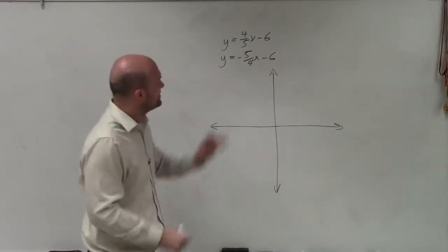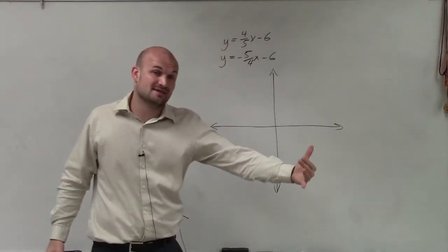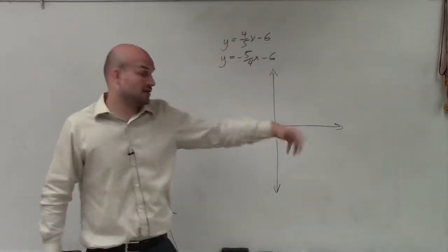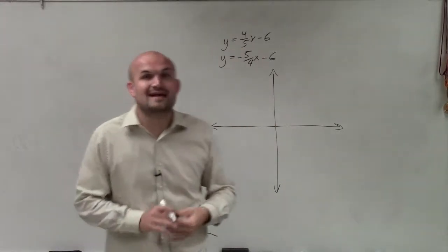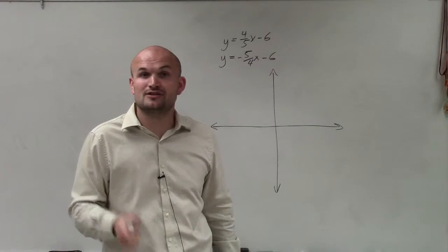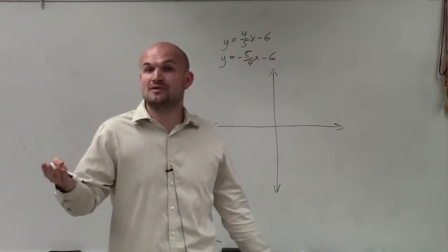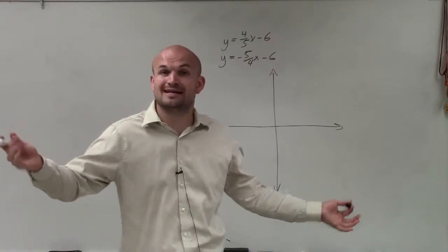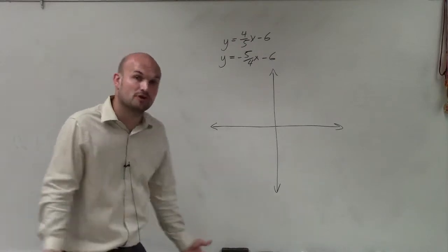One thing I notice about this is these slopes look very similar to each other. However, they are the reciprocals of one another—one is positive, one is negative. That tells me I have perpendicular lines, meaning lines that are going to intersect at one point and produce orthogonal lines or lines that create a 90-degree angle.